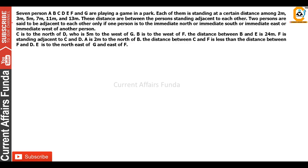7 persons are playing a game in a park. Each of them is standing at a certain distance — among 2m, 3m, 5m, 7m, 11m, and 13m. These distances are between persons standing adjacent to each other. What does adjacent mean? Like here is P, this is Q, this is R.